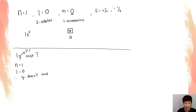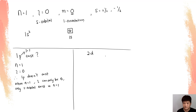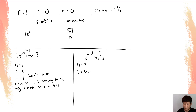Why does 1p not exist? Because when n equals 1, l can only be 0, so only the s orbital exists at n equals 1. How about 2d — will 2d exist? The d orbital requires l equals 2. When n equals 2, l can only be 0 and 1, so l cannot be 2. Therefore, 2d does not exist.